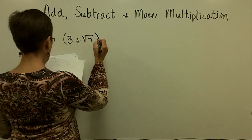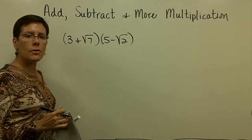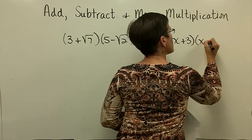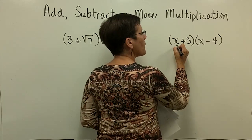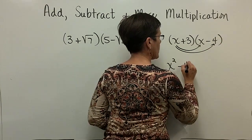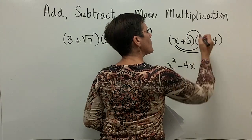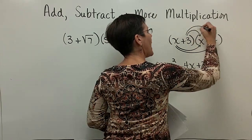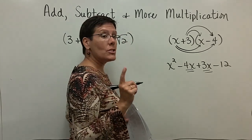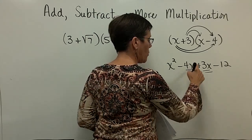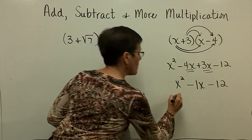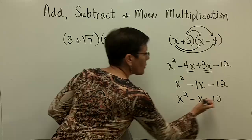Let's take now a binomial times a binomial. Let's do a simpler one: x plus 3 times x minus 4. You FOIL that by taking x times x to get x squared, x times negative 4 is negative 4x, positive 3 times x is positive 3x, and positive 3 times negative 4 is negative 12. Then you combine the like middle terms: negative 4 plus 3 is negative 1x, so this is written as x squared minus x minus 12.